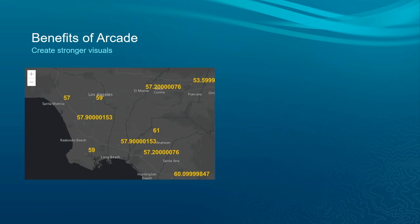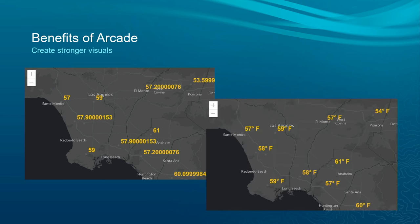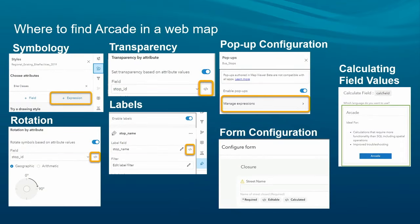One of the benefits of Arcade is you can create stronger visualizations. We're GIS people — we want beautiful, aesthetically pleasing, and easy-to-understand maps. Arcade helps us do that. For example, on the left we see a bunch of decimal points and we just had to deal with it, whereas on the right, we're combining numeric and text to create a well-rounded label that helps our reader better understand the data behind the map.